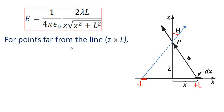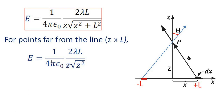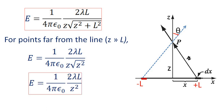For points far from the line, when z is much greater than L, the term L² can be neglected. So z² + L² ≈ z², and z × sqrt(z²) = z², giving the approximation E = (1 / 4 pi epsilon_0) × (2 lambda L) / z².